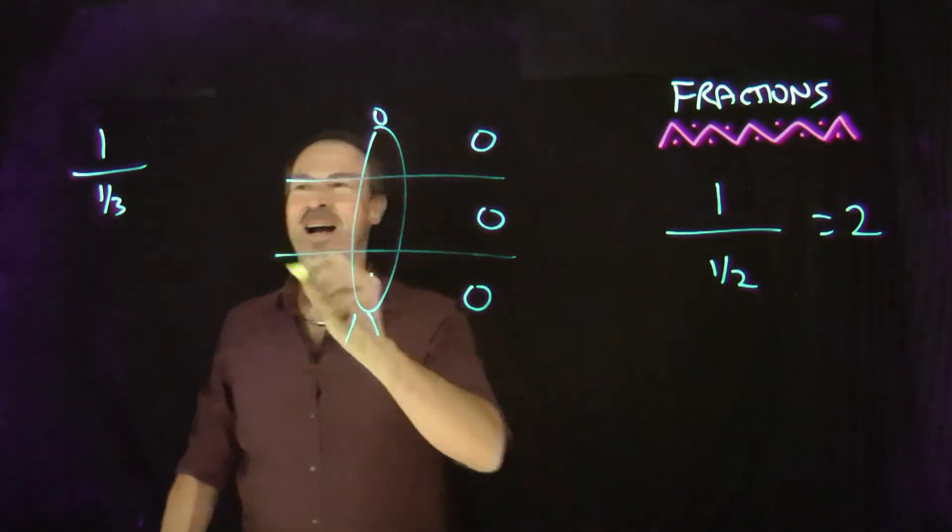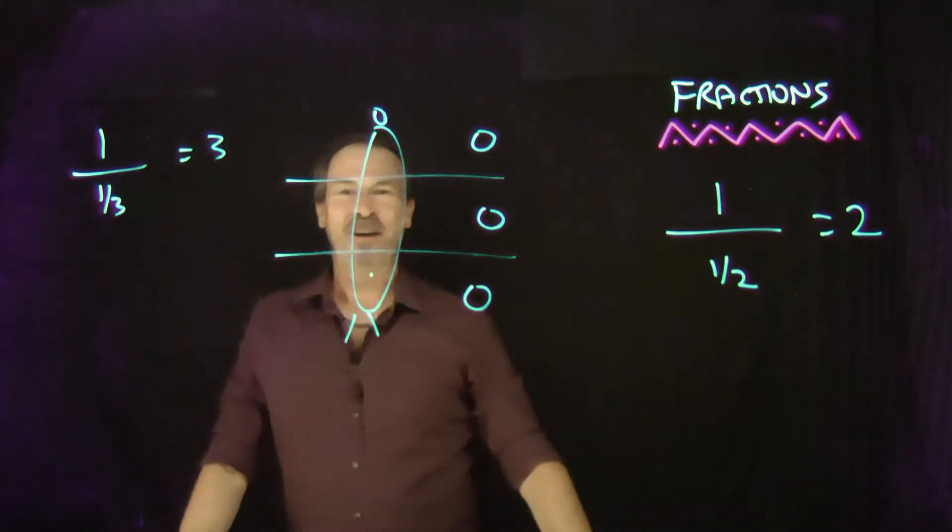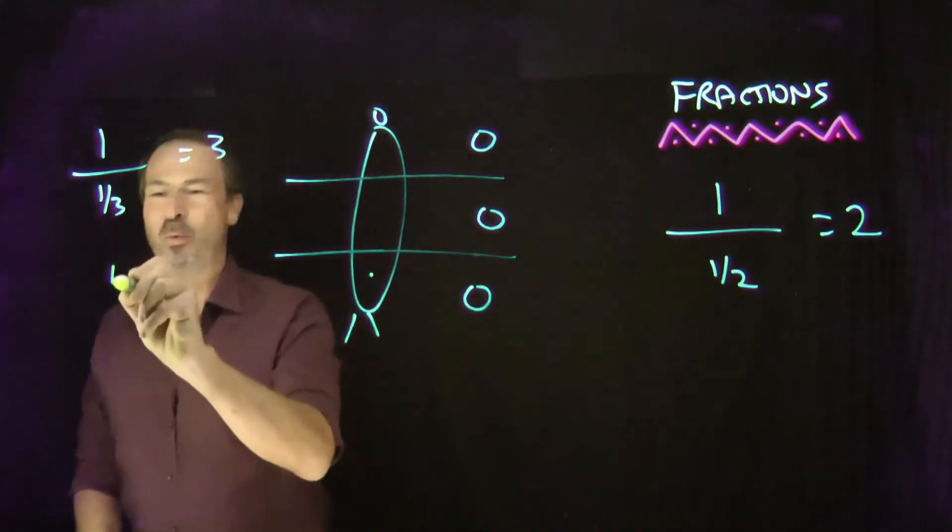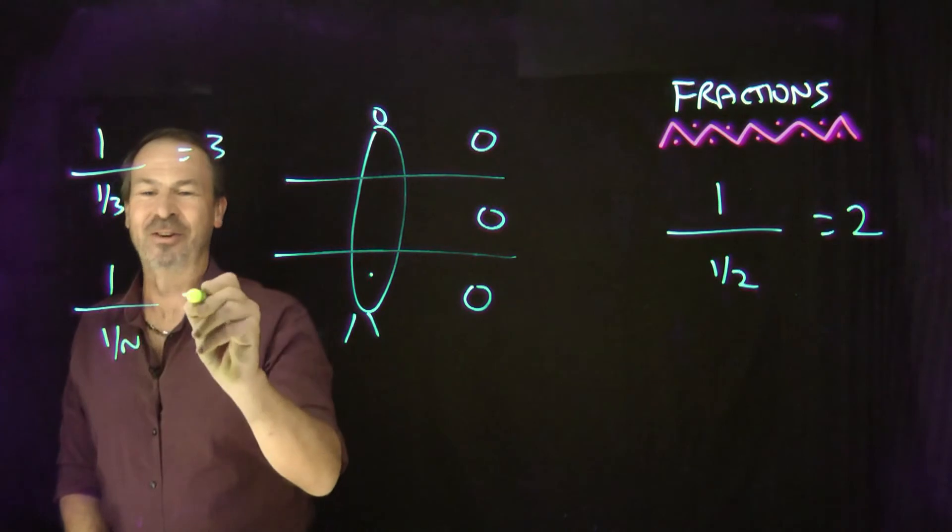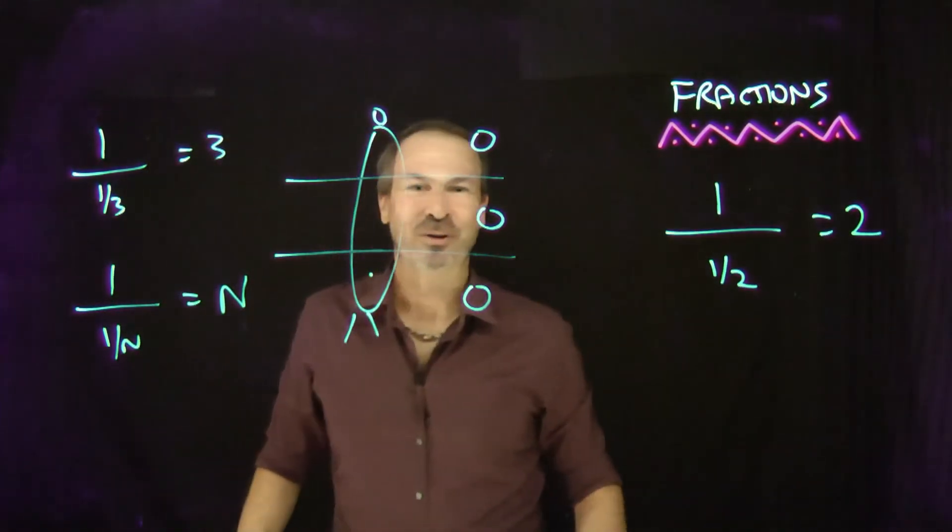Ah, that's three pies per student. In fact, I bet you can see now that one pie for one nth of a student is n pies for the whole student. You can see that in general.